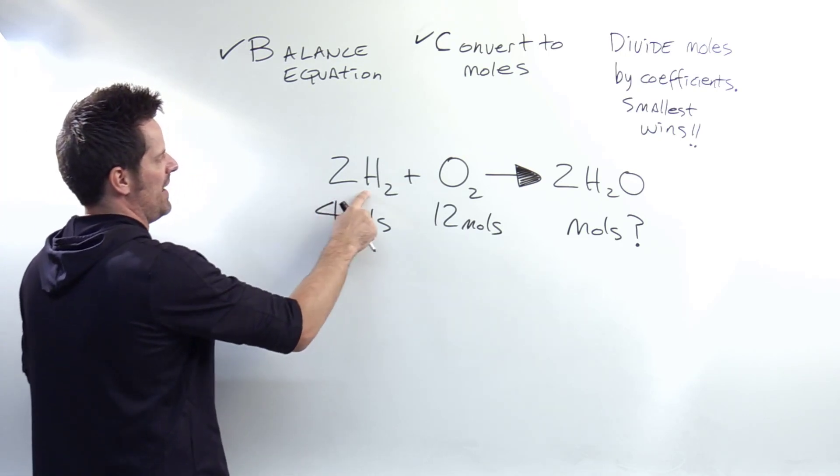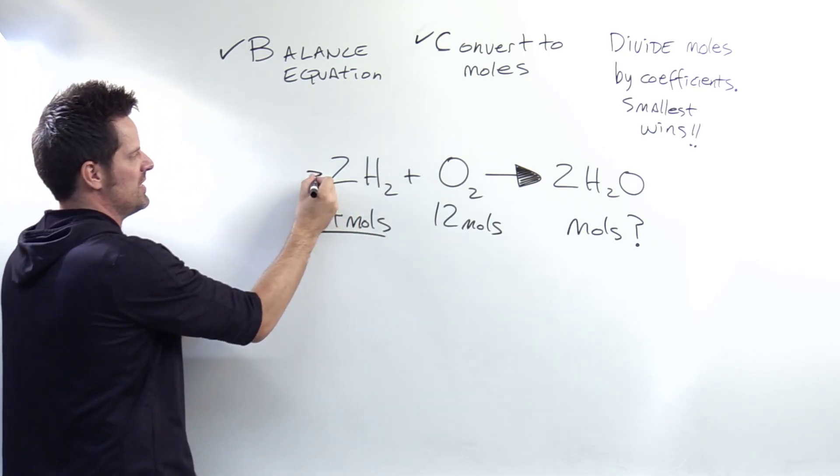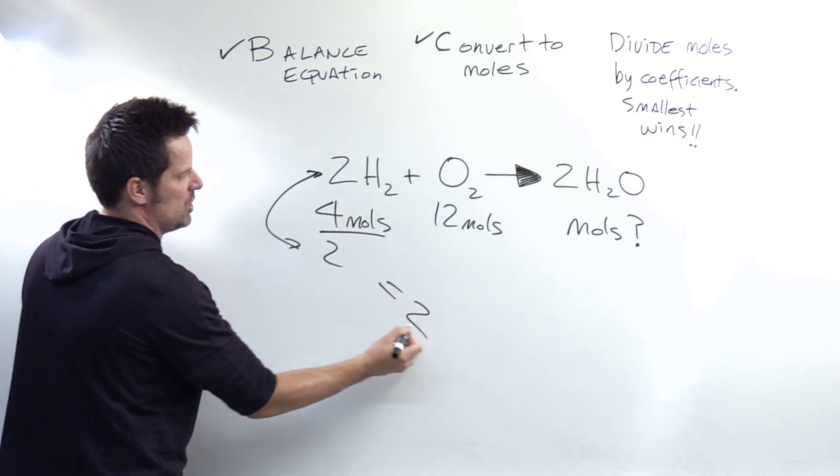For example, here I have four moles of H2. So I'm going to divide it by the coefficient that's next to the H2, which is this two right here. Four divided by two is equal to two.